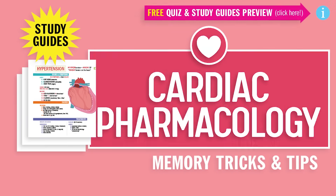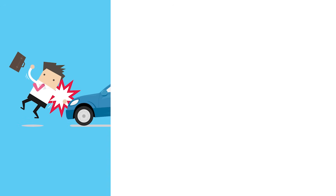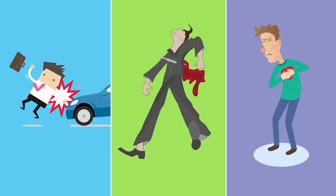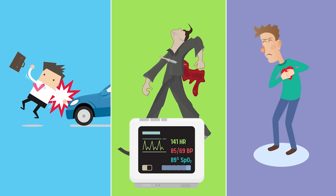Alright guys, let's begin. You're the nurse in the emergency department and you have three patients. Bob was in a car accident, Betty was stabbed in the chest, and Tommy just had a heart attack waiting for his NCLEX results. They're all pale, cool, and clammy with vital signs including tachycardia, hypotension, and low oxygen saturations. The heart monitor shows uneven QRS complexes. What could it be, and what is the first thing you want to do as a nurse?